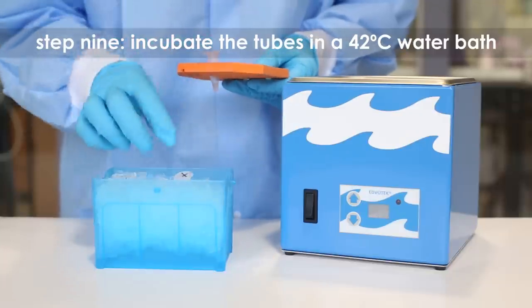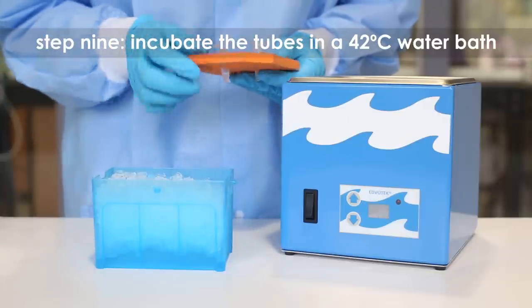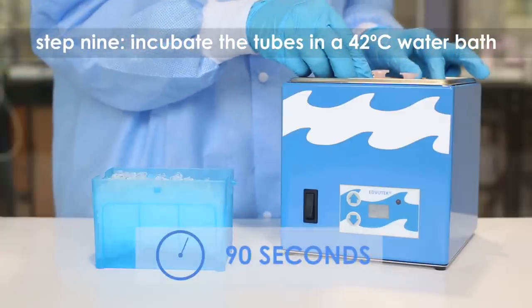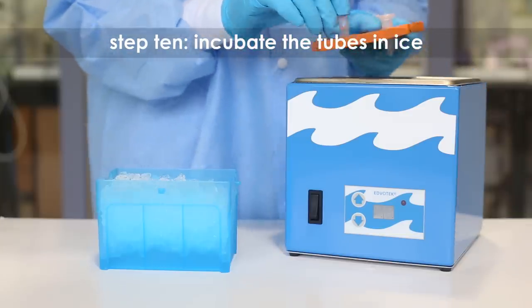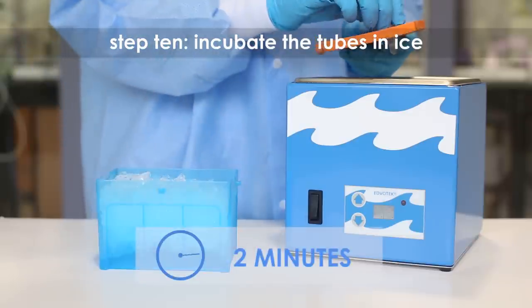Step nine: heat shock the cells by placing the transformation tubes in a water bath set at 42 degrees Celsius for 90 seconds. Step ten: immediately return the tubes to the ice bucket and incubate for two minutes.